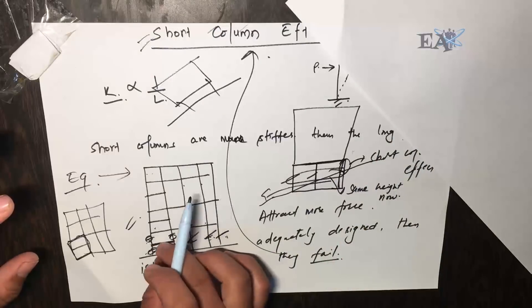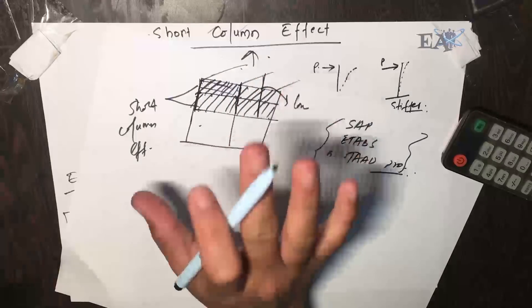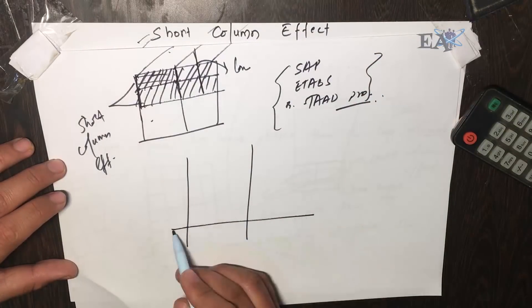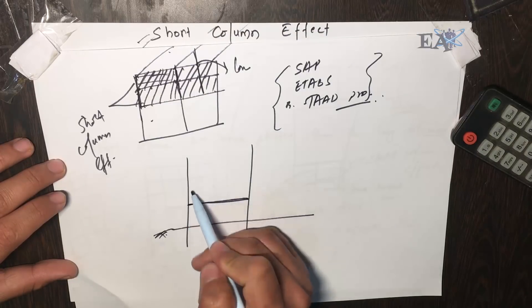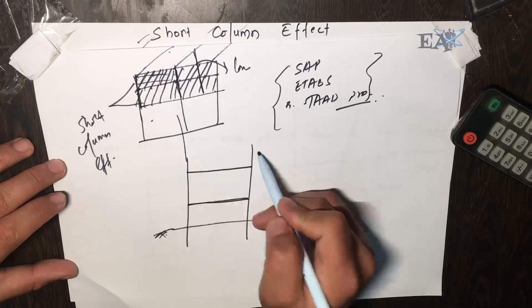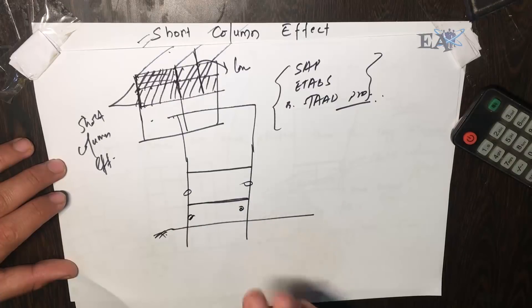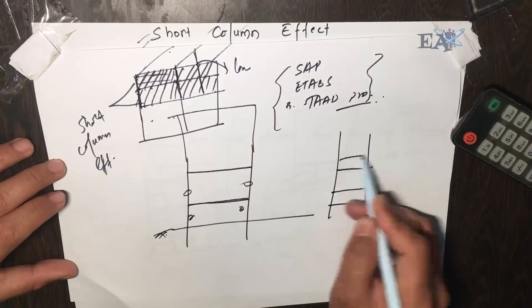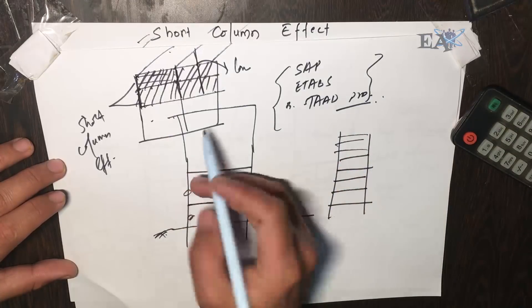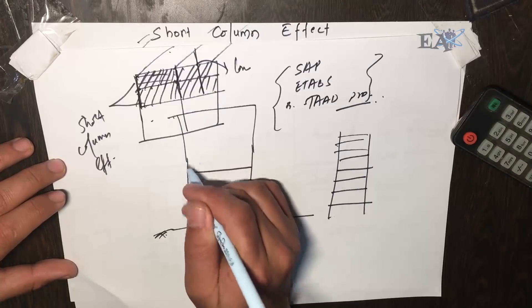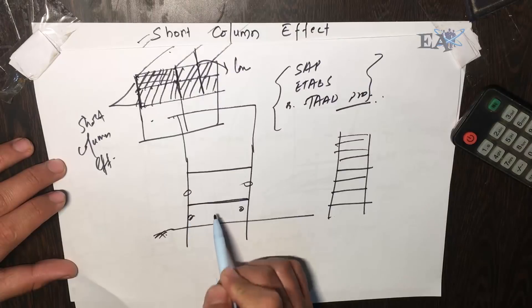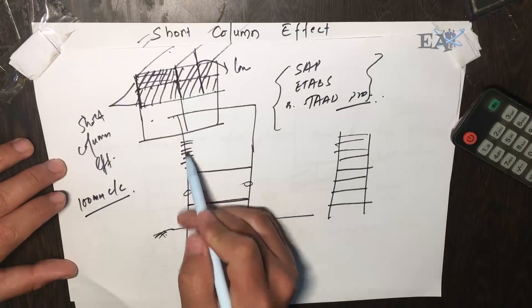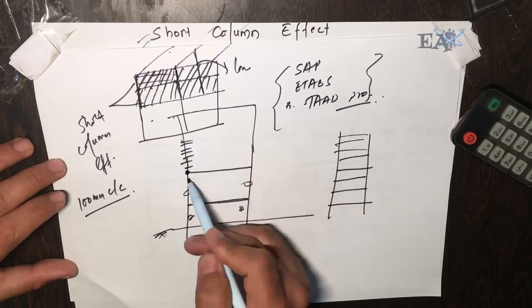But suppose we don't have any option to cut the land, adjust the beam, or change the architecture. In that situation, if these columns will have the short column effect, what we can do is provide stirrups at closer spacing — for example, lateral ties placed at around 100 mm center-to-center throughout the entire span of the short column, and extending a certain distance beyond the short column region as well.